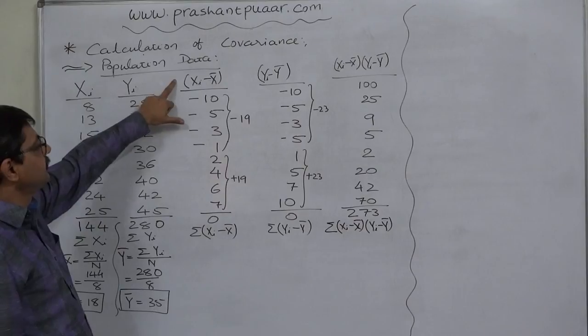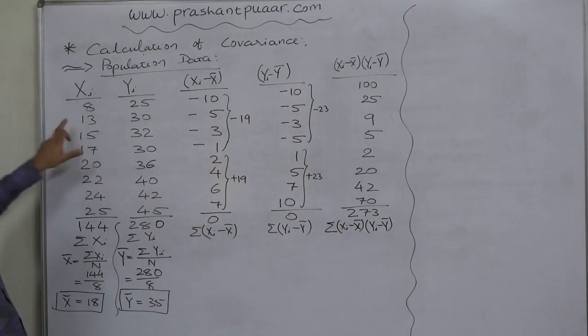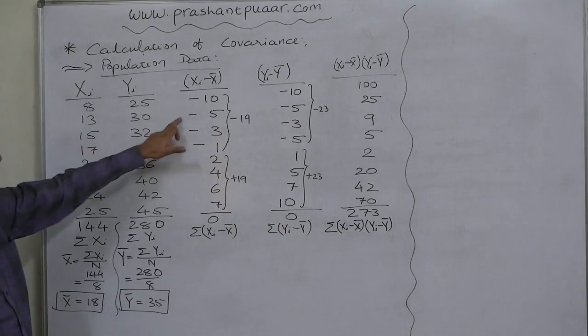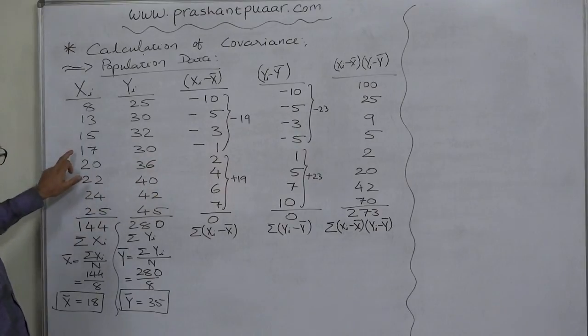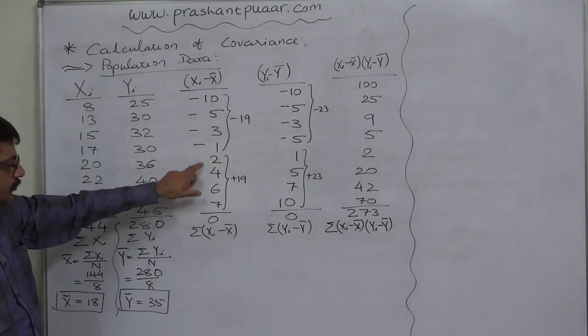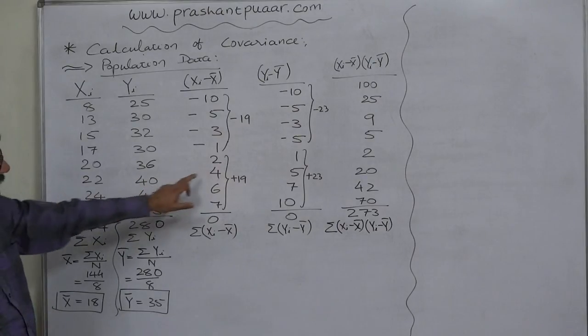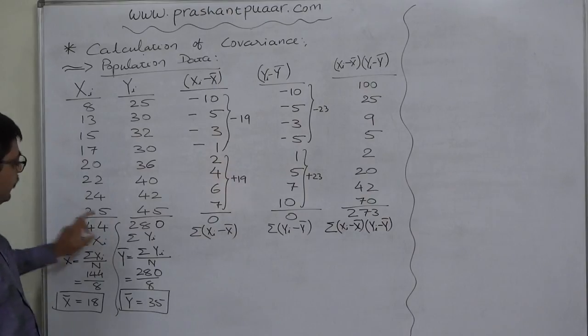First, let us get for x, x minus x bar. 8 minus 18 is minus 10, 13 minus 18 minus 5, 15 minus 18 minus 3, 17 minus 18 minus 1, 20 minus 18 positive 2, 22 minus 18 positive 4, 24 minus 18 positive 6 and 25 minus 18 positive 7.